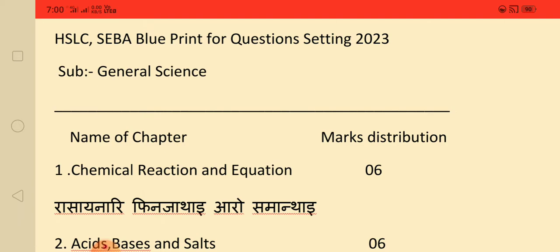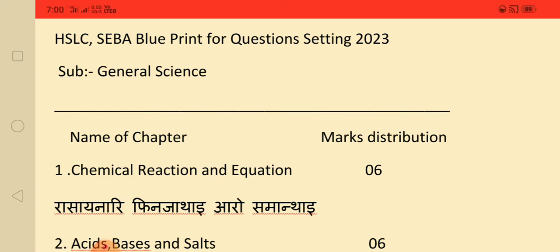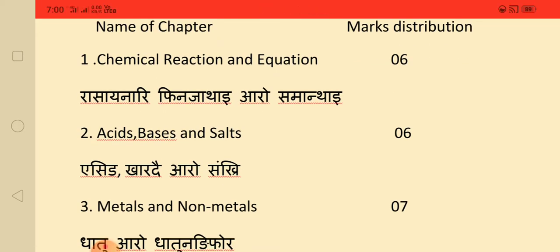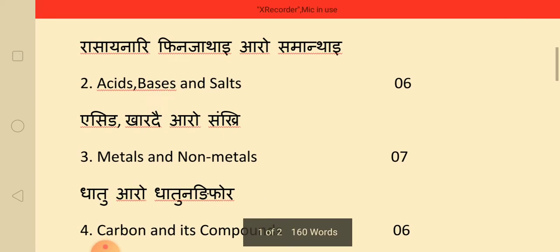This is the chemical reaction and equation. Acid bases and salts — these chapters carry 2 marks each.